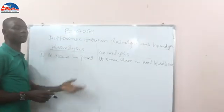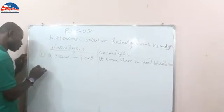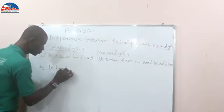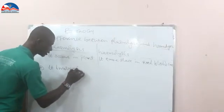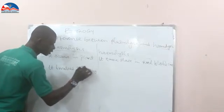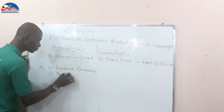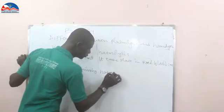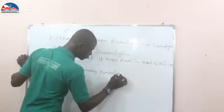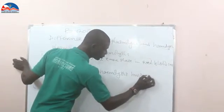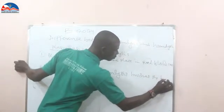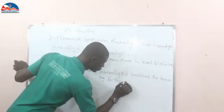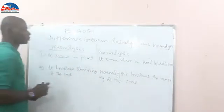Number two difference: plasmolysis involves the shrinking of the cell, while hemolysis involves the bursting of the cells.